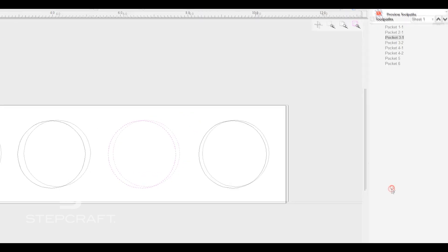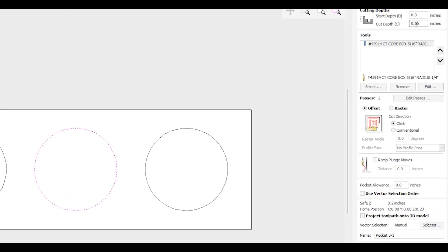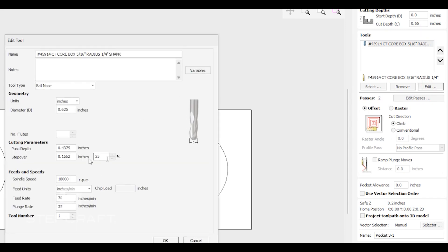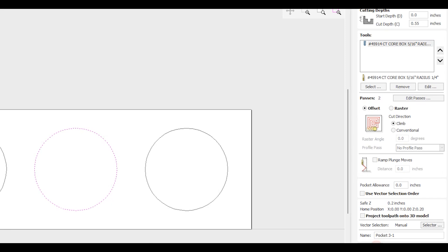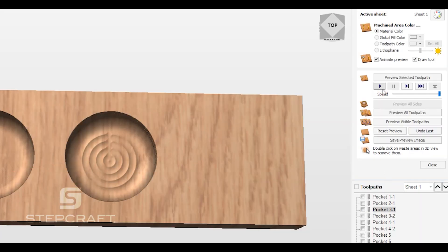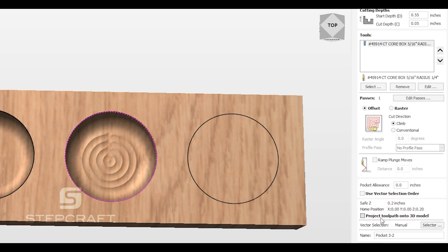Our first pass we're going to go down almost to the bottom - 0.55 inches. We're going to do our 25% stepover. We have our rough bottom, same as pocket one except now it's 50 thou taller. We're going to fix that by doing a second pass. If we start at 0.55 and go down 50 thou, we end up at our 0.6.